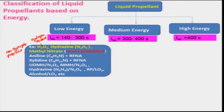Besides this, there are several other bipropellants, particularly aniline and RFNA (red fuming nitric acid), xylidine and RFNA, UDMH and N2O4, MMH (monomethylhydrazine) and nitrogen tetroxide, hydrazine and nitrogen tetroxide, and RP (rocket propellant) and liquid oxygen. Keep in mind that RP with liquid oxygen is basically a semi-cryogenic propellant because liquid oxygen has to be cooled such that it remains in liquid state at ambient temperature. Alcohol and liquid oxygen is also a semi-cryogenic combination.